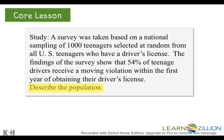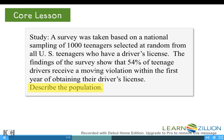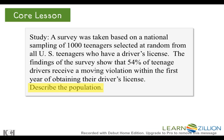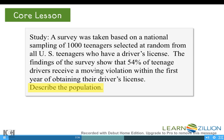A survey was taken based on a national sampling of 1,000 teenagers selected at random from all U.S. teenagers who have a driver's license. The findings show that 54% of teenage drivers receive a moving violation within the first year of obtaining their driver's license. The population of the study consists of everyone about whom we want to make an inference — in this problem, all the teenagers in the United States who have a driver's license.